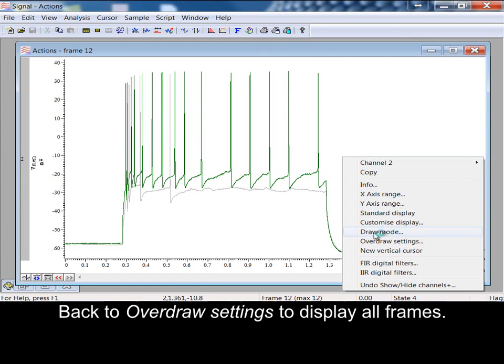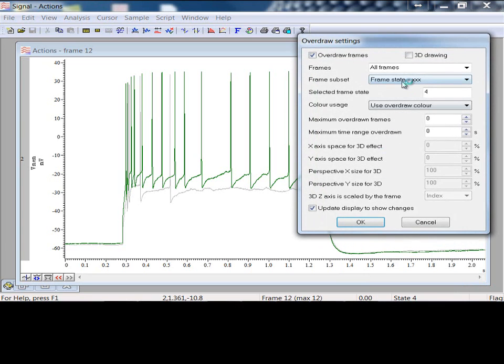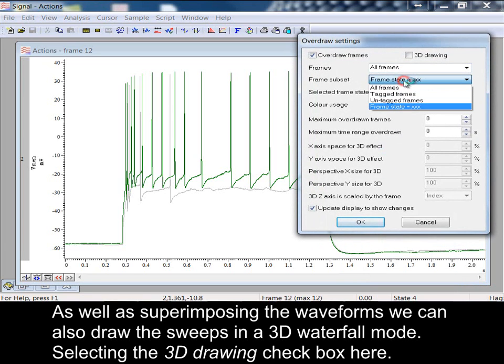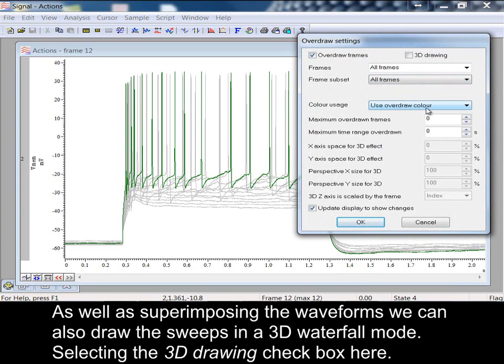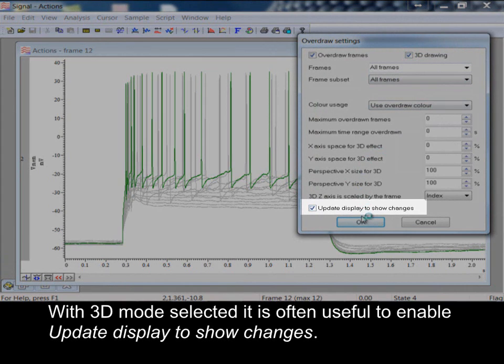Back to overdraw settings to display all frames. As well as superimposing the waveforms, we can also draw the sweeps in a 3D waterfall mode, selecting the 3D drawing checkbox here. With 3D mode selected, it is often useful to enable update display to show changes.